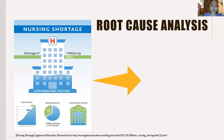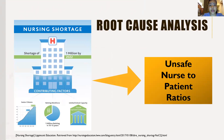Nursing shortage, which causes unsafe nurse-to-patient ratios, is projected to reach one million by 2022. Contributing factors shown in the graphic include senior citizens growing in number, baby boomers retiring — with one million retiring in 10 to 15 years. Research shows the average age of nurses is 50 years old. Additionally, limited school capacity is a factor, with 79,000 applicants turned away from nursing programs, which also contributes to unsafe nurse-to-patient ratios.